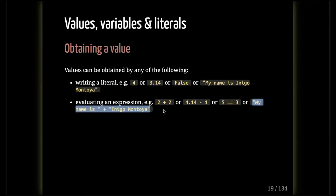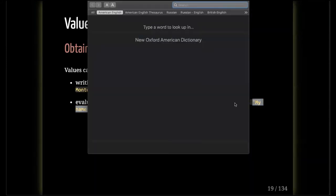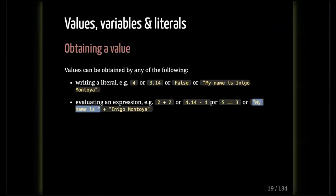Same with 'My name is Inigo Montoya' — you've got 'my name is' as one string, and you then concatenate that to another string. Python has to do this operation to get to the value 'my name is Inigo Montoya' as a single string. It has to complete that operation, evaluate that expression to get to that value. So an expression is any code that results in a single value.